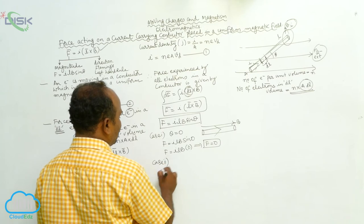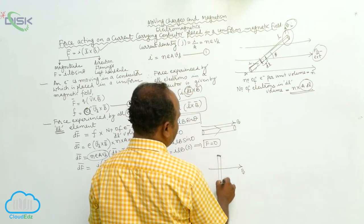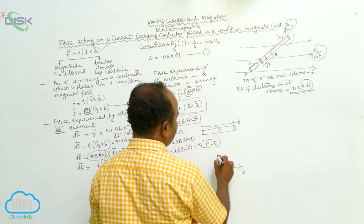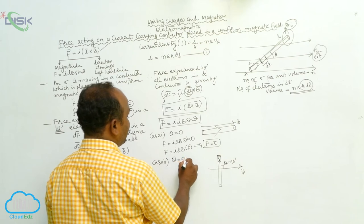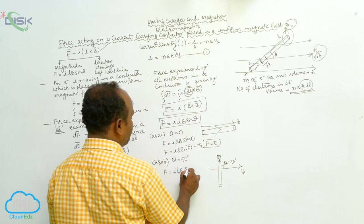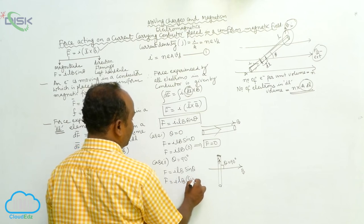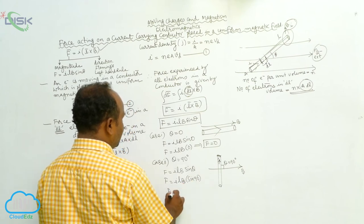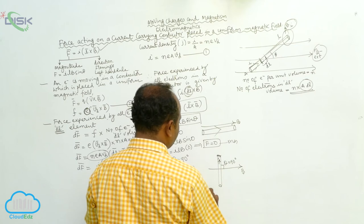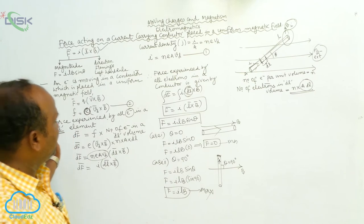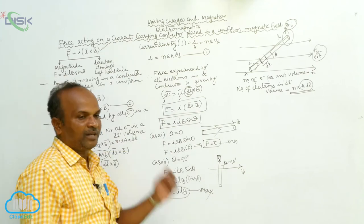Case 2: the current-carrying conductor carrying current I is placed perpendicular to the magnetic field, so θ = 90°. Therefore F = ILB sin90° = ILB × 1 = ILB. This is the maximum force. Whenever the conductor is along B the force is zero; when perpendicular to B it experiences the maximum force F = ILB.